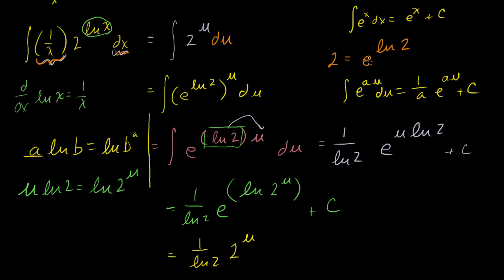So this is going to be equal to 1 over the natural log of 2. This simplifies to just 2 to the u. The natural log a, I could just write in general terms. I can, in general, write any number a as being equal to e to the natural log of a. This is the exponent you have to raise e to to get a. If you raise e to that, you're going to get a. So e to the natural log of 2 to the u, that's just 2 to the u. And then I have my plus c.